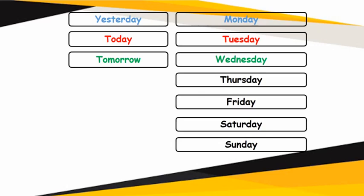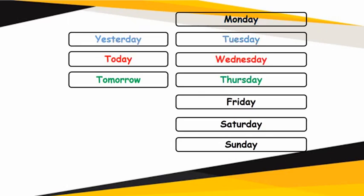Let us move on to the next one. Today is Wednesday — both of them are red in color. Children, you can understand by using the color code. Yesterday is in blue, so which day is in blue here? Read the name of the day — that's Tuesday. Which day will be tomorrow? Tomorrow is green in color, so which day is green? Thursday. So if today is Wednesday, yesterday it was Tuesday and tomorrow it will be Thursday.